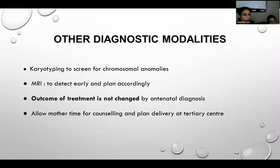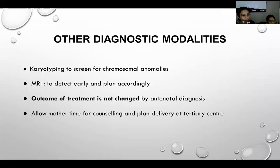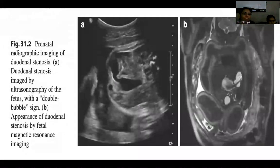MRI can also be done for early diagnosis and planning. However, the outcome of treatment is not changed by antenatal diagnosis; it only allows time for counselling and planning for delivery at a tertiary center with advanced surgical and ICU care. USG double bubble sign and MRI are the key antenatal imaging findings.